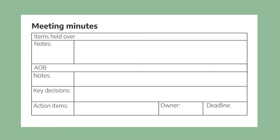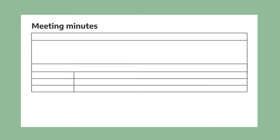At the end of our notes it's a good idea to have a summary of the key decisions made — and you could also include a summary of the action points. Finally, if a follow-up meeting was agreed on, the date, time, and location should be included here. A link to this template is included in the video description.